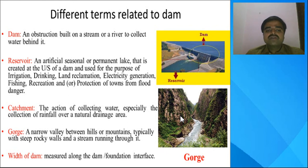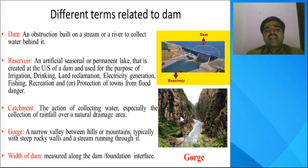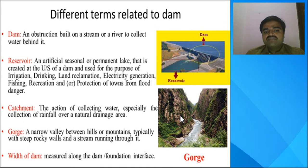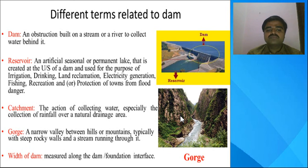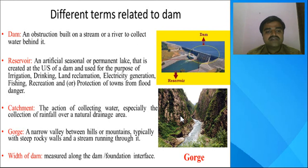The next term is the reservoir — it is an artificial, seasonal, or permanent lake created on the upstream side and used for different purposes such as drinking water supply, land reclamation, and electricity generation. The next term is catchment — it refers to the collection of water, especially rainfall, over a natural drainage area.